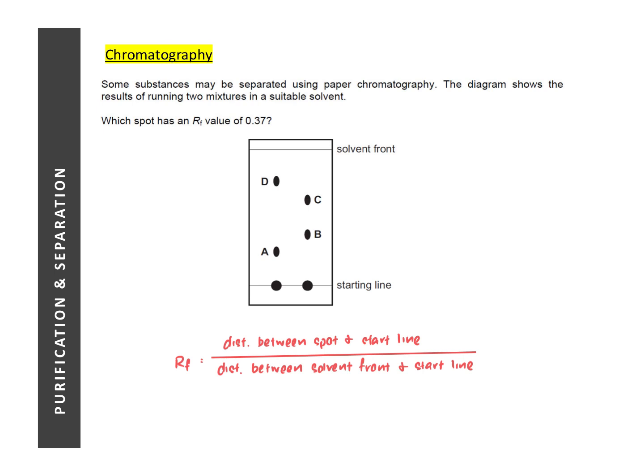Now this being an MCQ question means that there's no need for you to take out your ruler and do any measurements. The trick is this. RF value, for example, I'm going to use spot A. RF value is calculated by taking the distance between the spot and the start line and dividing by the distance between the solvent front and the start line.